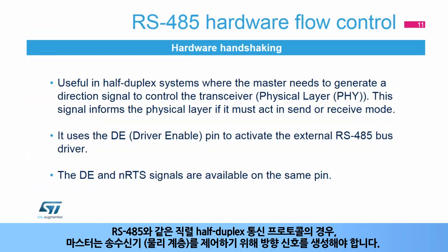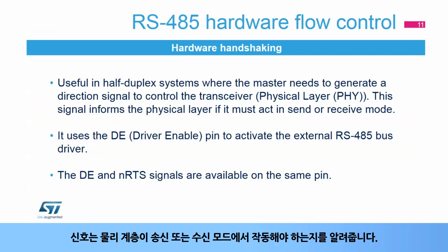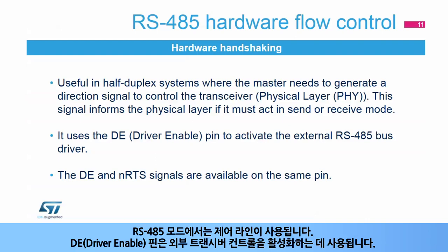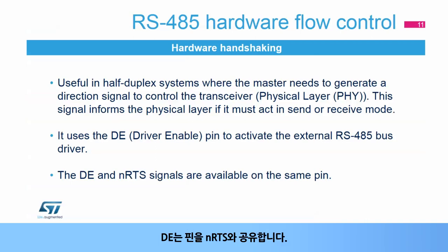For serial half-duplex communication protocols like RS-485, the master needs to generate a direction signal to control the transceiver or physical layer. This signal informs the physical layer if it must act in send or receive mode. In RS-485 mode, a control line driver enable is used to activate the external transceiver control. DE shares the pin with NRTS.